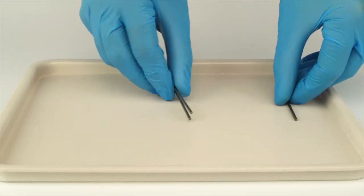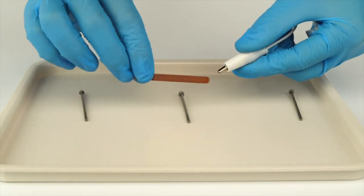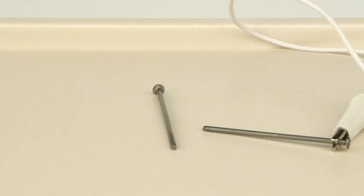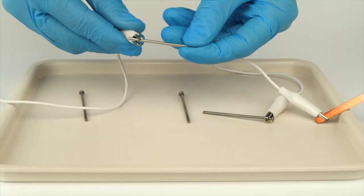Take the three iron nails. Use the crocodile clip wires to connect the first nail to the copper plate. Leave the second nail as is. Connect the third nail to the zinc wire.